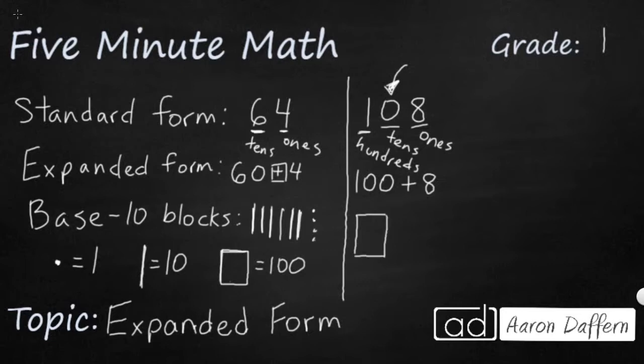Now I need 8 ones. I'm not going to need any 10s because remember I have a 0 in the 10s place. So rather than drawing all 8 in one big column, typically you'll do 5 and then you'll start with another column. And so I've got 108 in standard form, expanded form, and base 10 blocks.